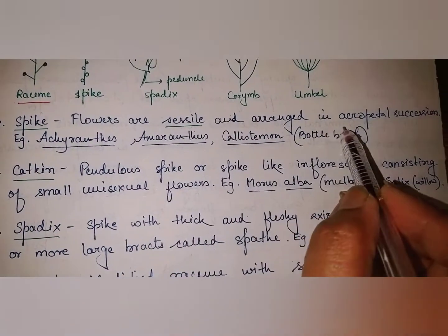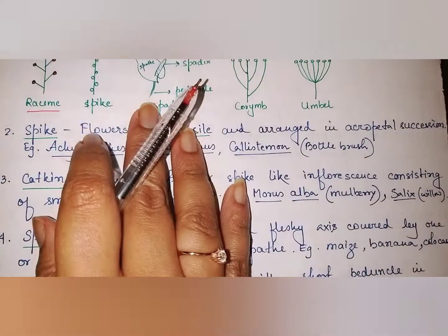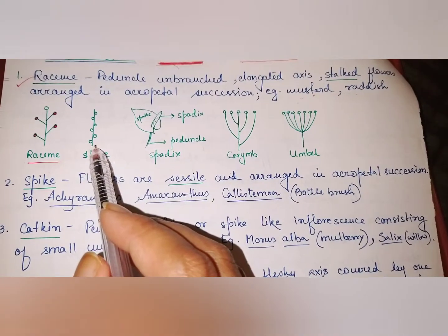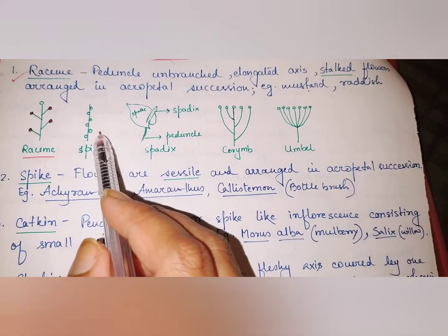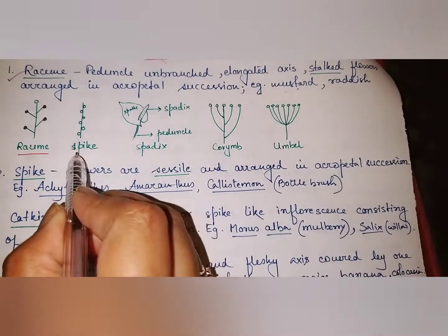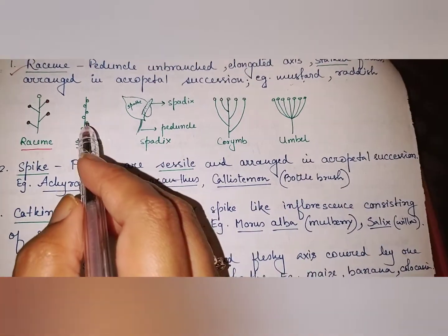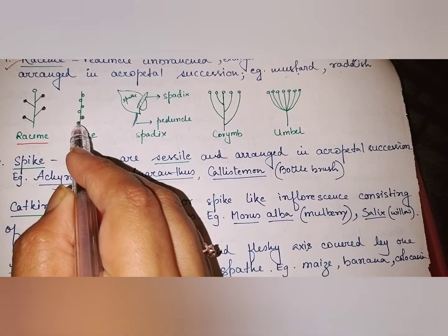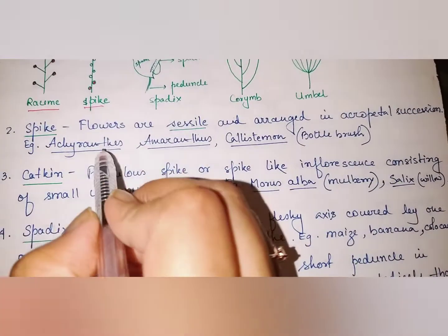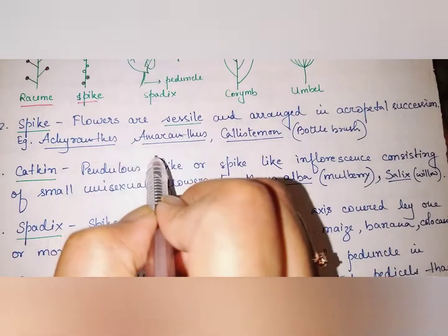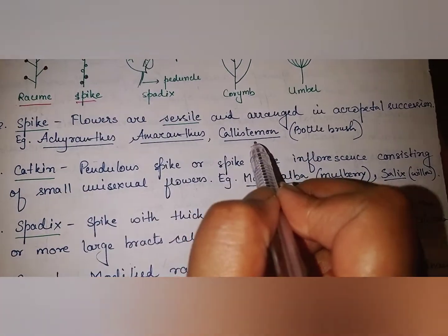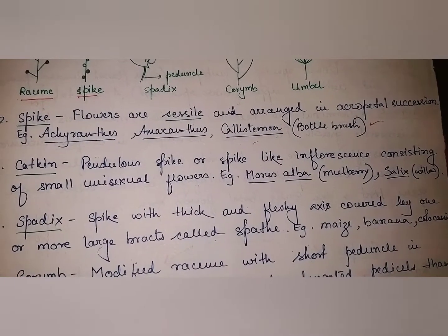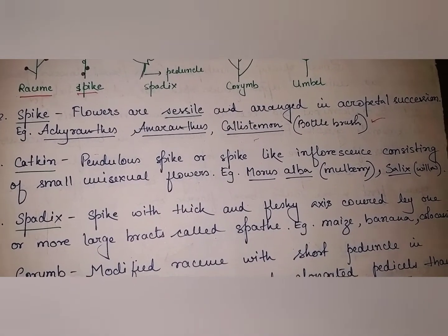Next is spike: the peduncle is an unbranched elongated axis, similar to raceme, but the key difference is that the flowers are sessile — they have no stalks. It is found in Achiranthus, Amaranthus, and Callistemon, which is the bottle brush plant.